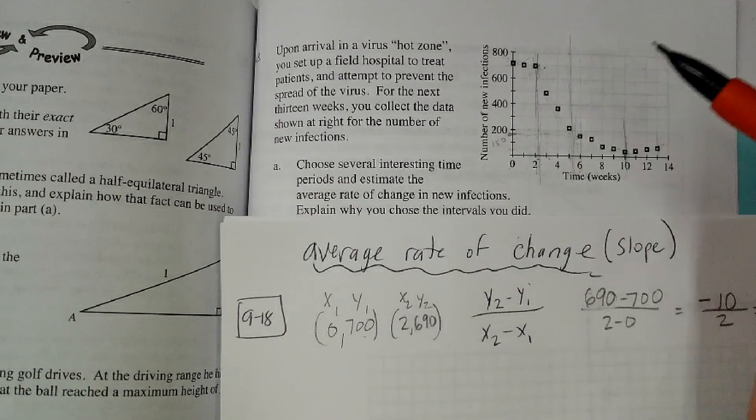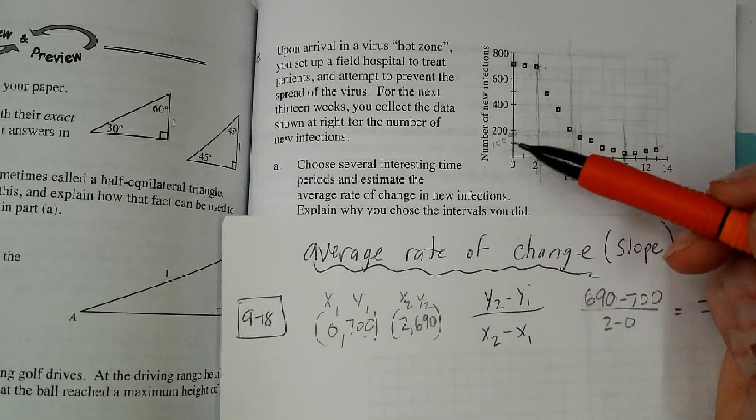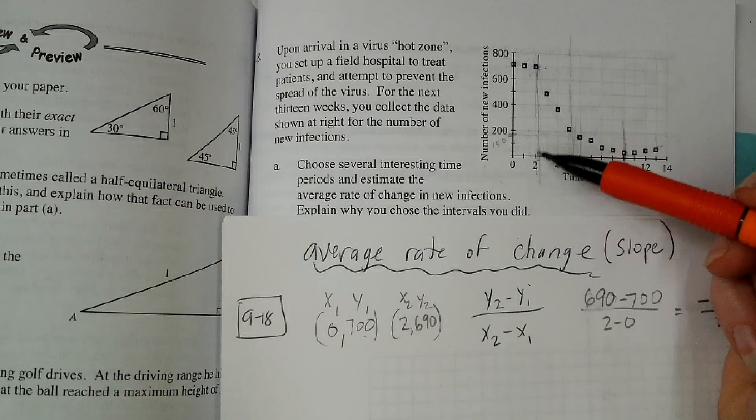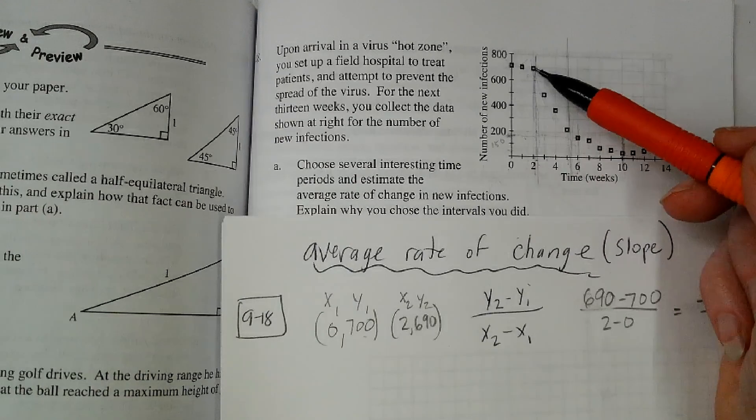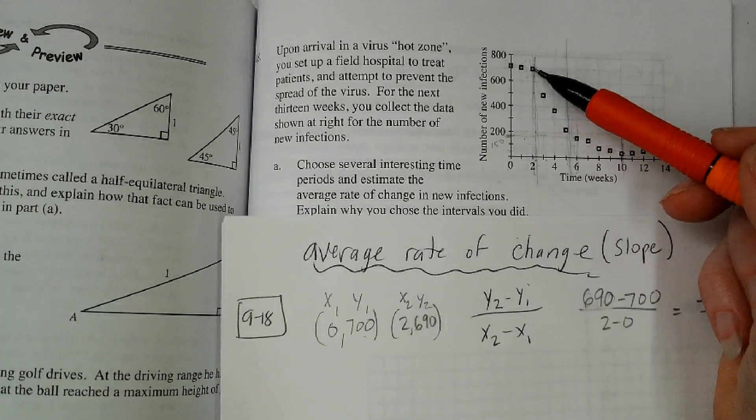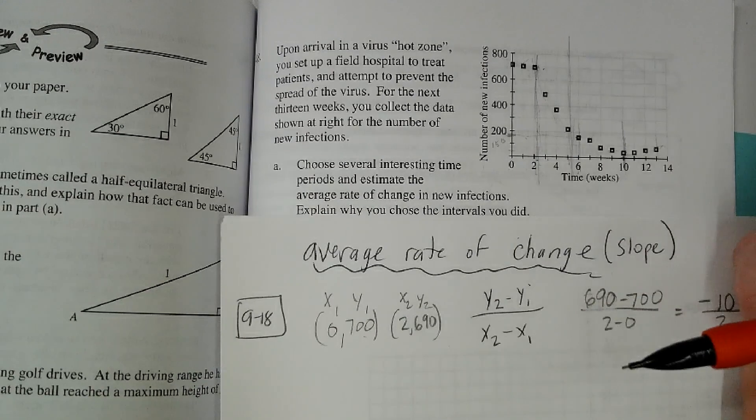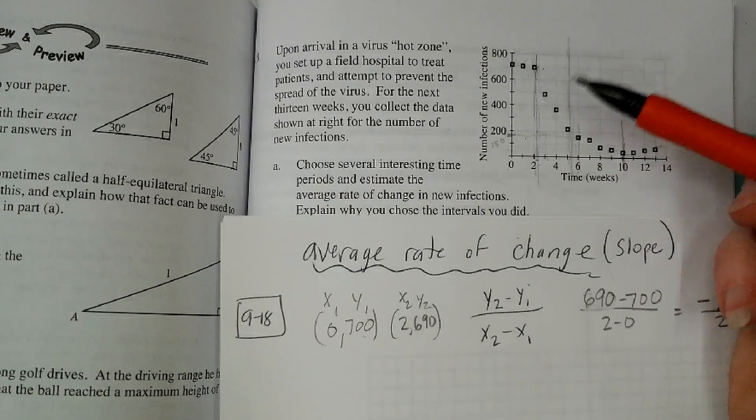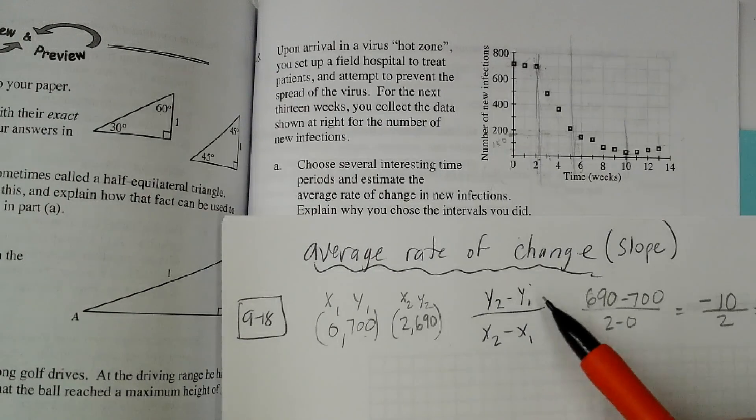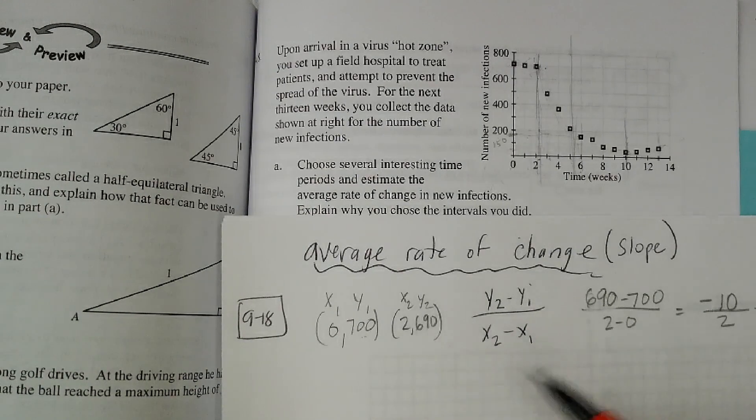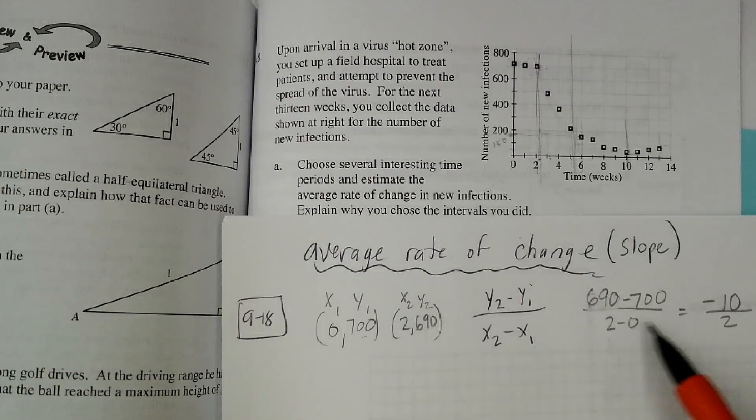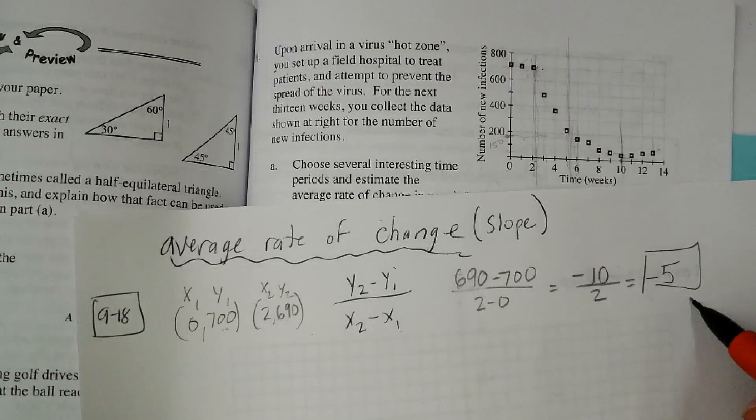So I'm going to pick this ordered pair, seems to be 0, 700-ish. And then for the 2, that seems to be 2, it's just under 700. So I put 690. Because we don't really know, we're just going to have to guesstimate it. So then I'm going to use my slope formula, Y2 minus Y1. So 690 minus 700, X2 minus X1, that was 2 minus 0.